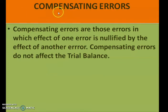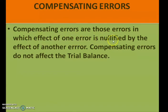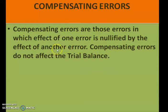The fourth category of error is compensating error. Compensating errors are those errors in which the effect of one error is nullified by the effect of another error — that is, one error is hidden by committing another error. Compensating errors also do not affect the trial balance.